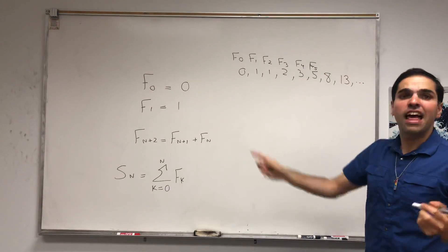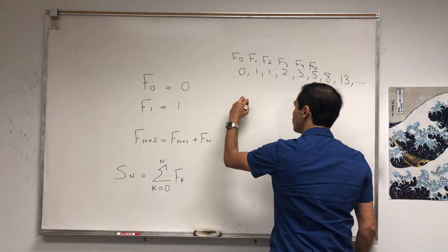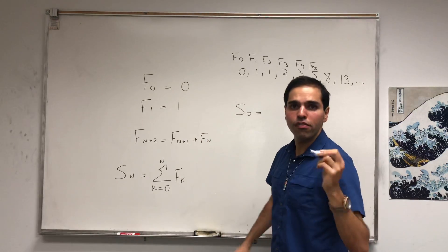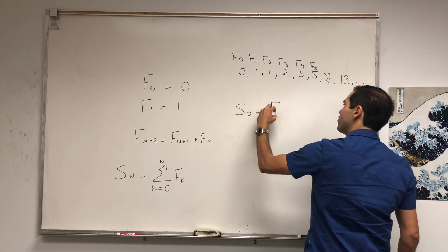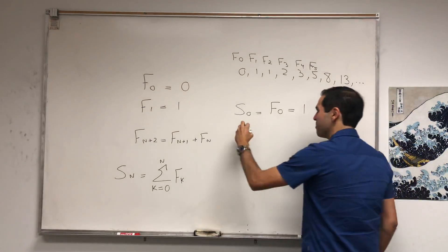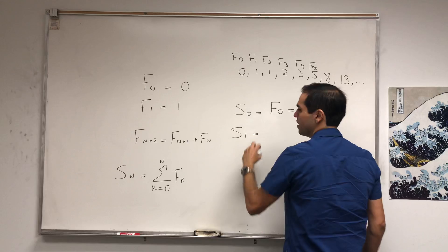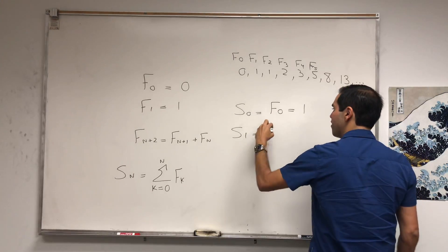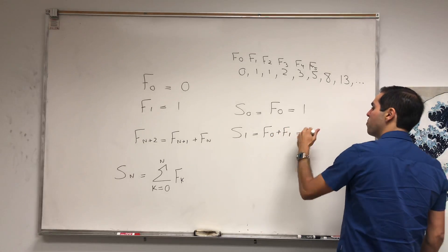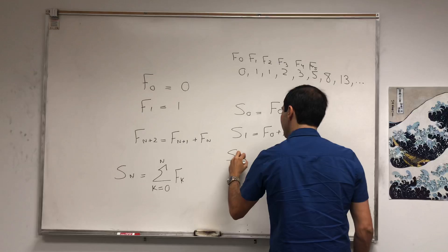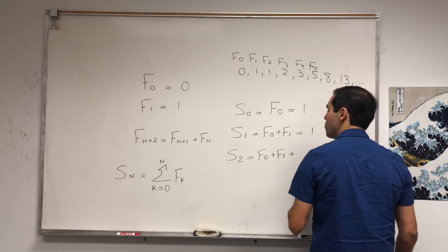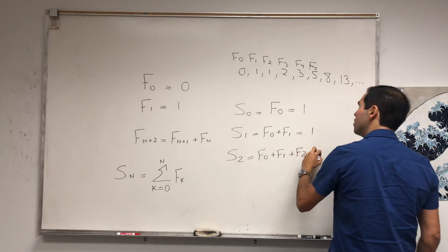S0 is just the sum from 0 to 0 of Fk, so that's just F0, and that's 0. Initially the sum of bunnies is 0. Then S1, that's the sum from 0 to 1 of Fk, so F0 plus F1, and that just becomes 0 plus 1, which is 1. S2, maybe a bit more interesting: F0 plus F1 plus F2, and if you sum all those up you get 2.